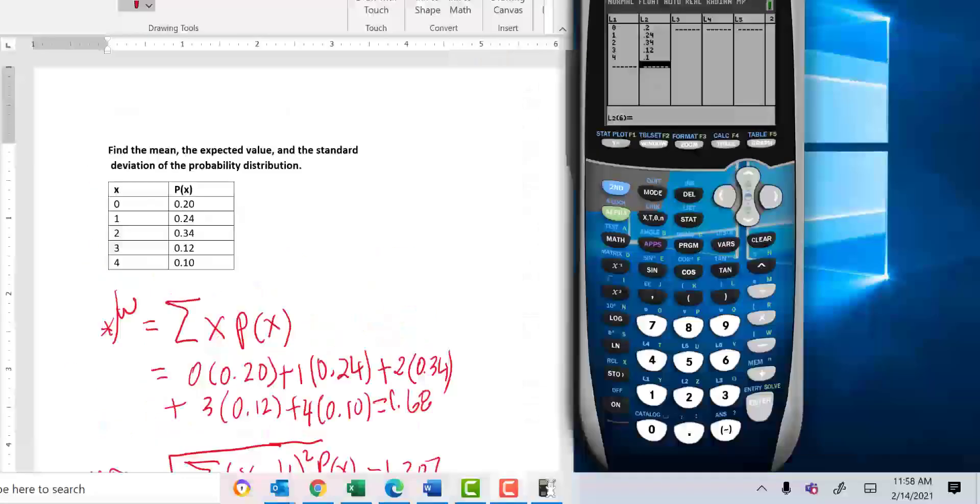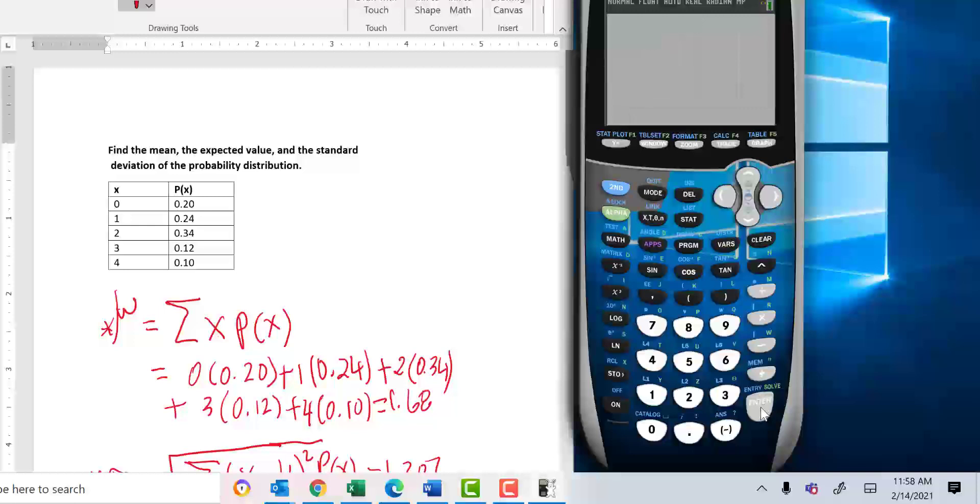How do you answer this question using your own calculator, the TI-84+? Here's how you do it. You're going to go to Stat, Edit, and enter the value of x in L1 and the value of p(x) in L2. Then you're going to go to Stat, Calc, One Variable Statistic.